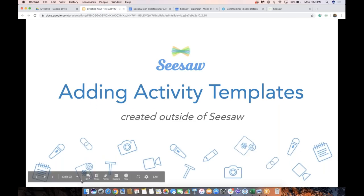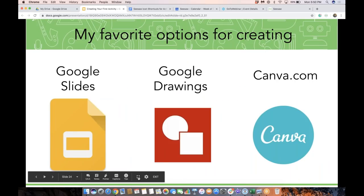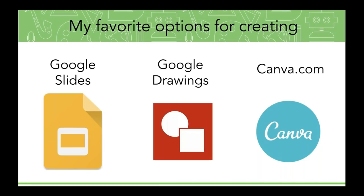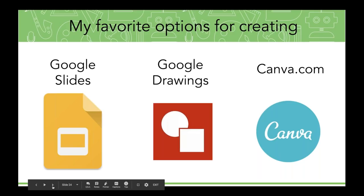So now let's continue and talk about templates created outside of Seesaw. A couple of my favorite tools to use if I need to create outside Seesaw are Google Slides, Google Drawings, or Canva.com, which is also free. If you are in a slide deck, you just go to File, Download As, and then choose JPEG or PNG, and it will download just the current slide as an image.